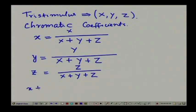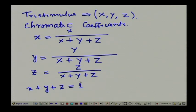Whenever we want to specify a colour, we specify it by its chromatic coefficients. As any colour can be specified by its chromatic coefficients, there is another way in which a colour can be specified — with the help of what is known as a CIE chromaticity diagram. So a colour can be specified both by its chromatic coefficients as well as by a chromaticity diagram. Thank you.